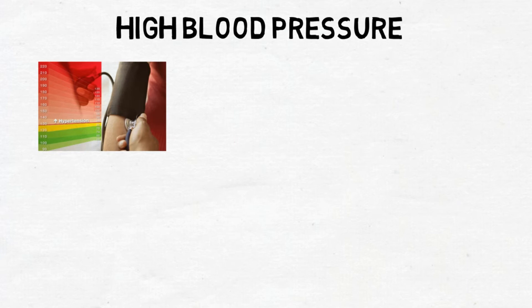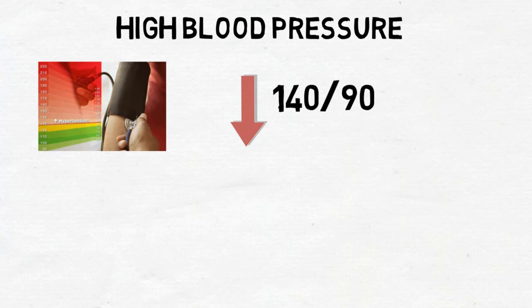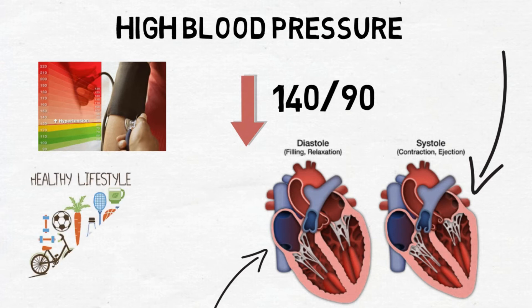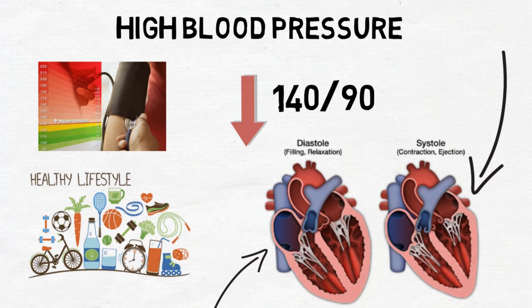Your blood pressure is the pressure of the blood in your arteries. It is recommended that your blood pressure should be below 140 over 90. The higher number is the pressure when your heart pumps blood out into the arteries, and the lower number is the pressure when your heart relaxes and refills. If your blood pressure is high, it can increase your risk of heart attack or stroke. You can help keep your blood pressure well controlled by adopting a healthy lifestyle — including stopping smoking, maintaining a healthy weight, undertaking regular physical activity, eating a healthy diet including limiting alcohol, and managing stress. Some people will need medication to help control their blood pressure.